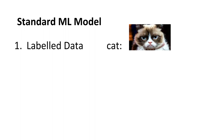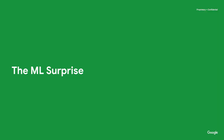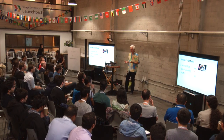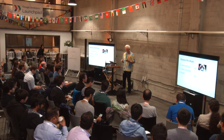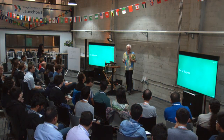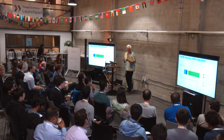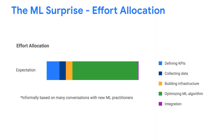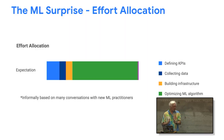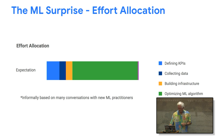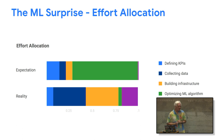You all know the standard model: you get some data, some pictures, you put some labels on it, throw in some TensorFlow stuff, and then profit, right? But it's not always quite that direct — sometimes a little more complicated. We've been talking to companies and asking what difficulties they expect. People expect the hard part will be the algorithm — all that math. But then they actually do it and the reality flips: the math part turns out to be the easy part.